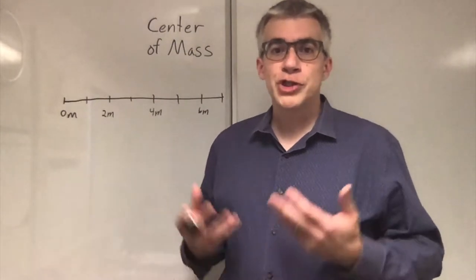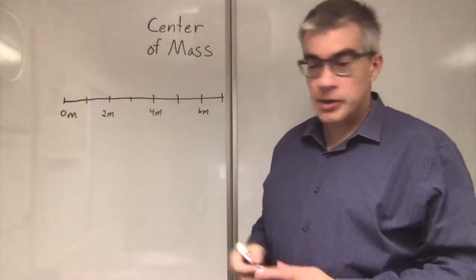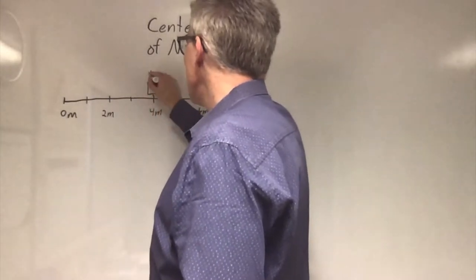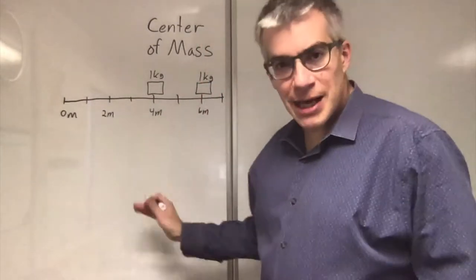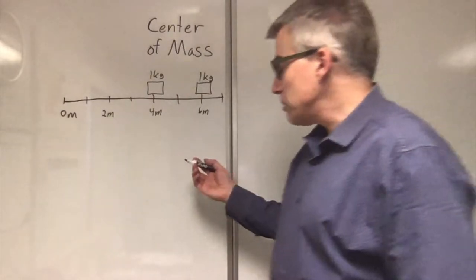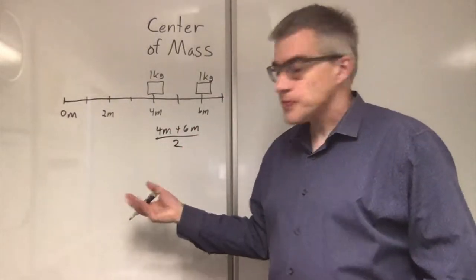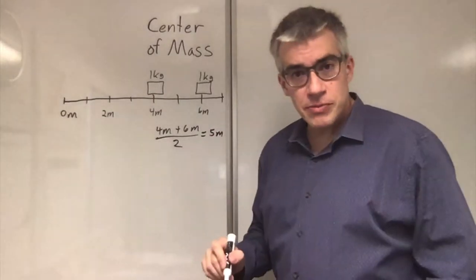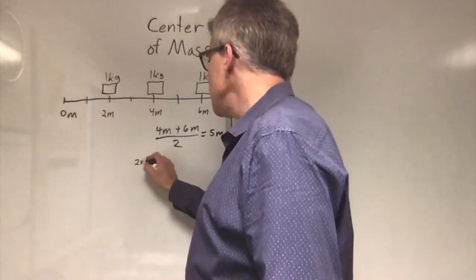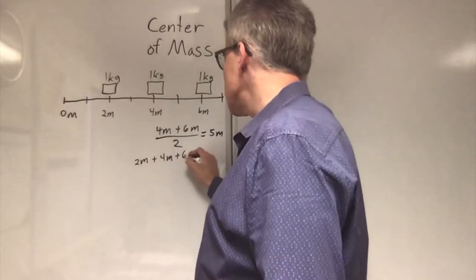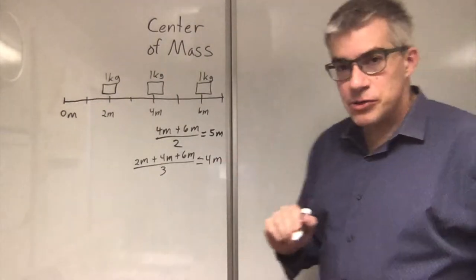Center of mass is like an average position for a set of masses. Let's say we have a coordinate axis starting at zero meters going positive to the right. If I have a one kilogram mass here and a one kilogram mass here, then their average position would be at the five meter mark. We could calculate that as four meters plus six meters over two because they're equal weights, and we get five meters.